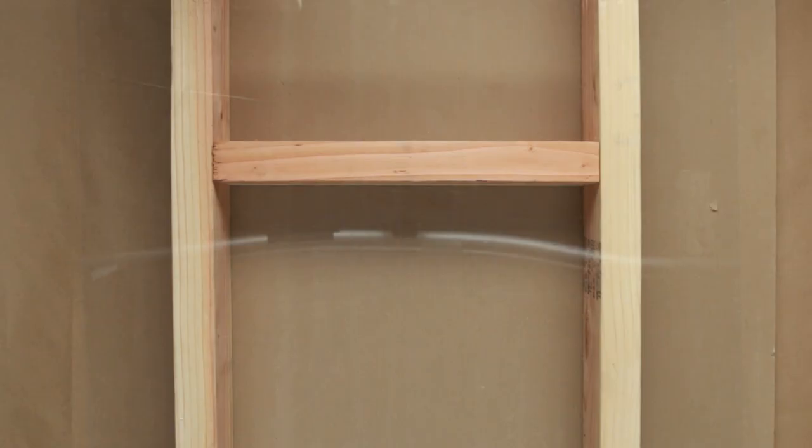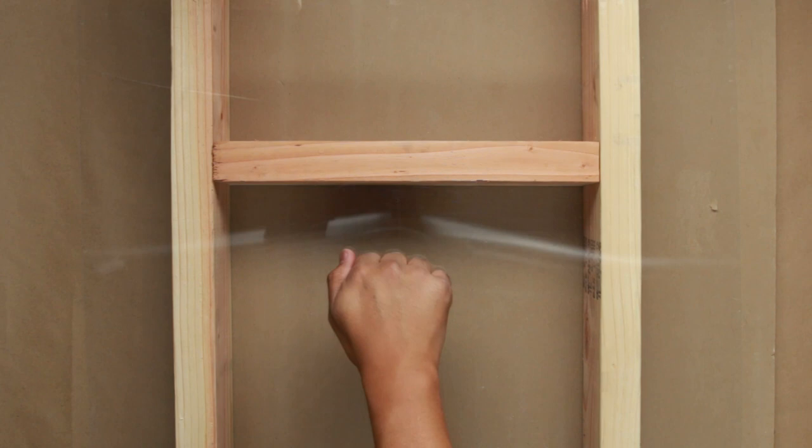Once you find the nail on the stud, it helps to knock on the wall to find where the stud is. Areas without a stud will sound hollow. Areas with a stud will give a deeper thump sound.